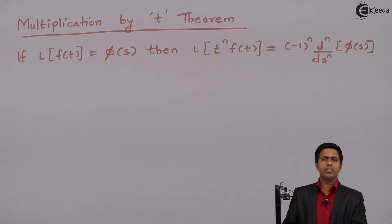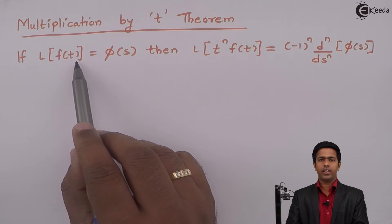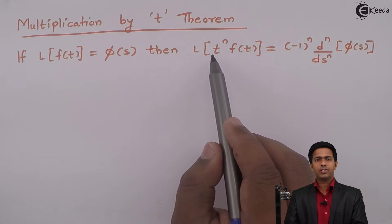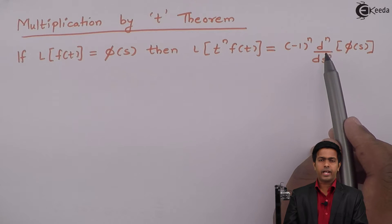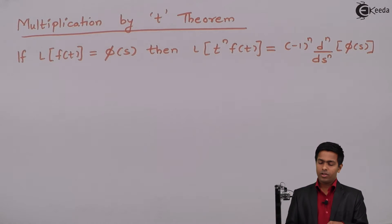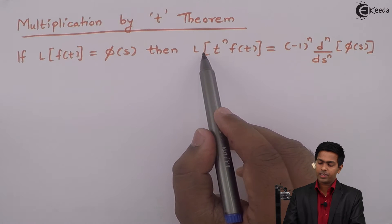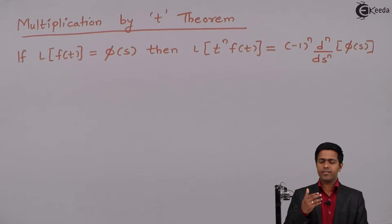Today we are going to learn a new theorem called the Multiplication by t Theorem of Laplace Transform. The statement is: if the Laplace of f(t) is φ(s), then the Laplace of t^n · f(t) equals (-1)^n times the nth derivative of φ(s), written as d^n/ds^n φ(s). It is called Multiplication by t because f(t) is being multiplied by t^n.